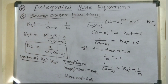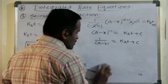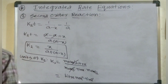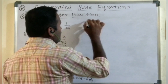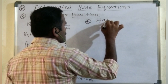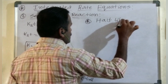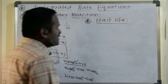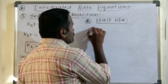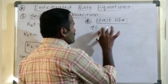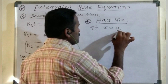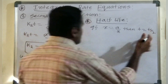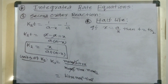Using this derivation, we can also find the half-life. Half-life is the time required to complete 50% of the initial concentration. If A equals A/2, then time becomes T½. Substitute both into the above second order rate constant K2 expression.